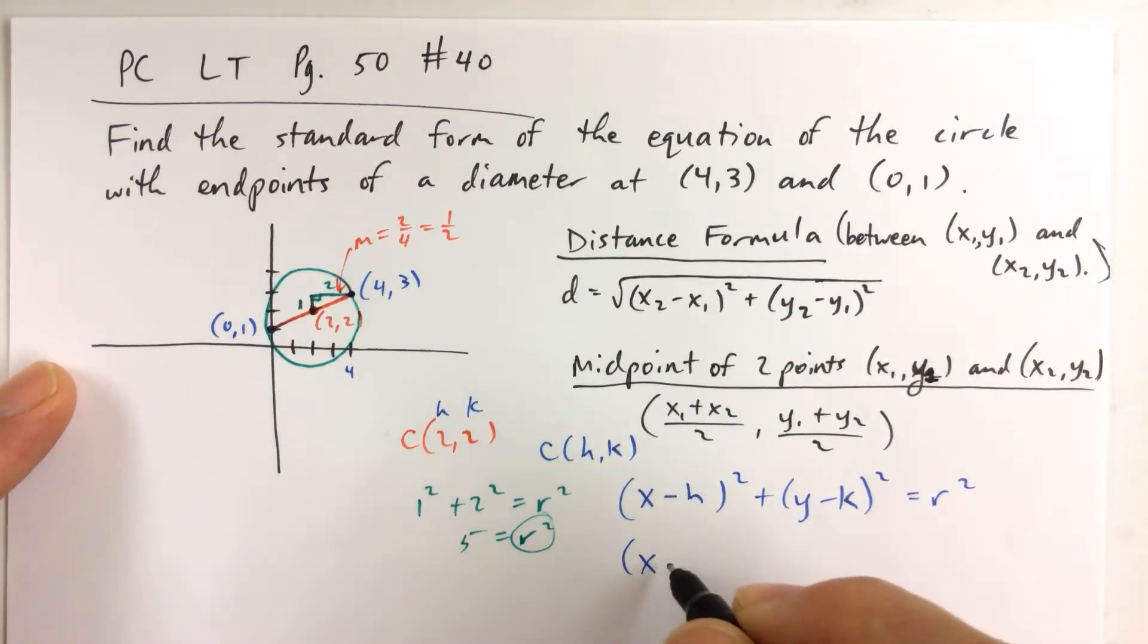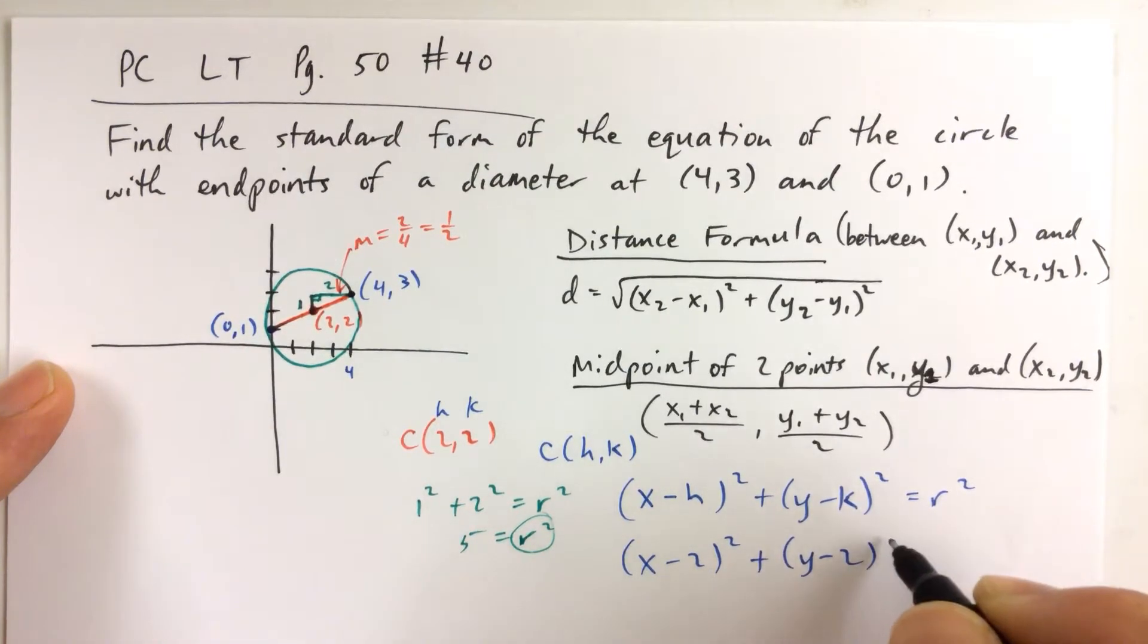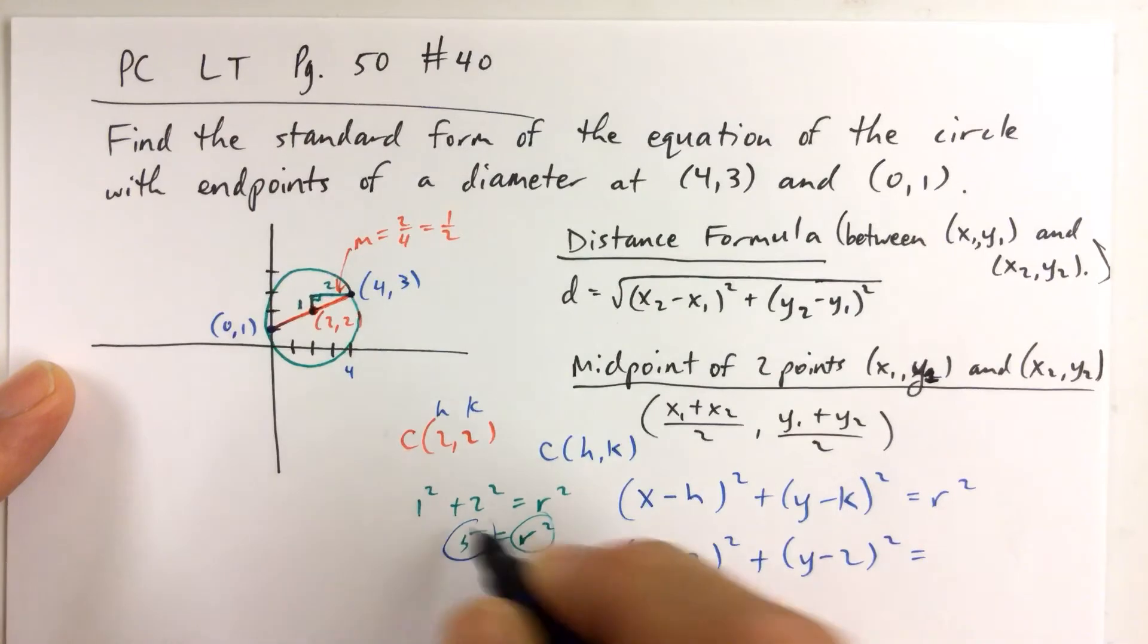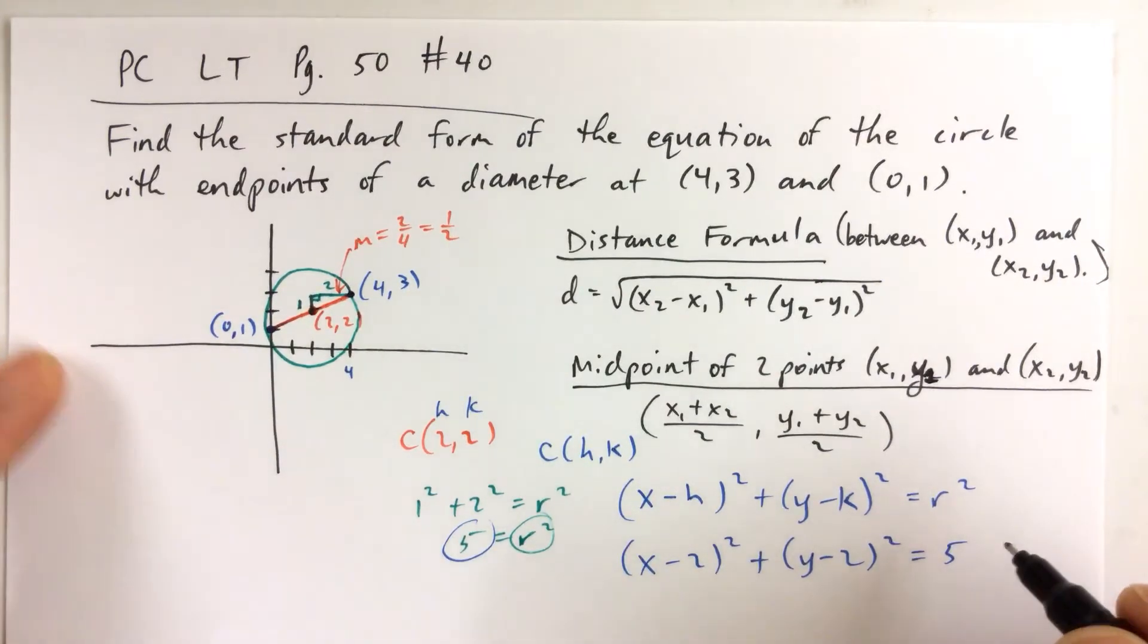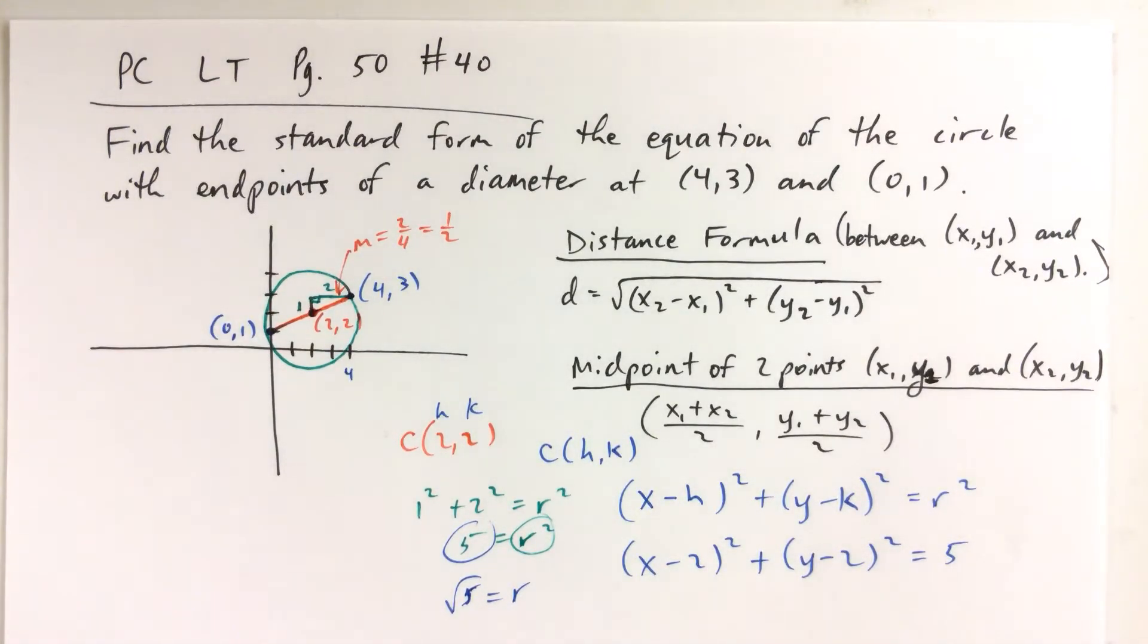With everything that we just talked about, the equation of this circle is (x - 2)² + (y - 2)² = r². And r squared is 5, so be careful with that. If you did solve for r and you got radical 5, then you would put radical 5 squared and you'd still get 5.